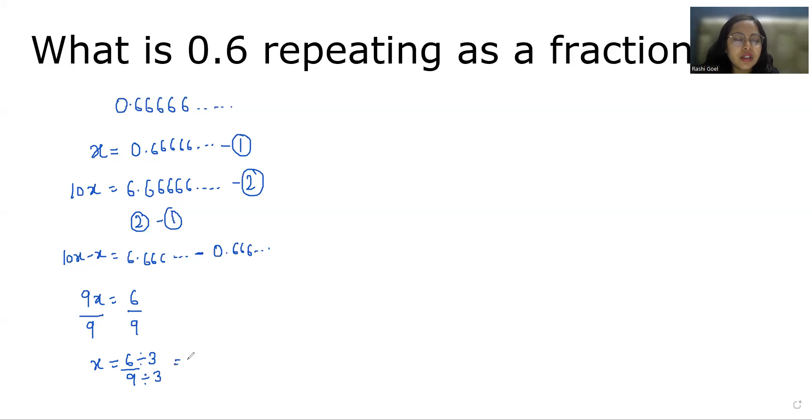So x equals 6 by 9, and I'm going to reduce this fraction by dividing by 3 in numerator as well as in denominator. So it gives us 2 by 3. So the value of x is 2 by 3. That means when we divide 2 by 3, it gives us 0.6 repeating.